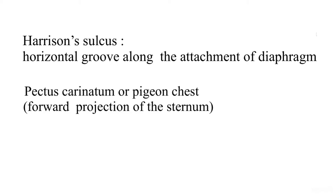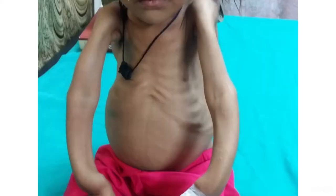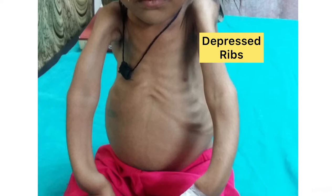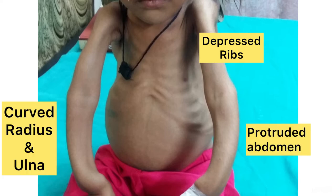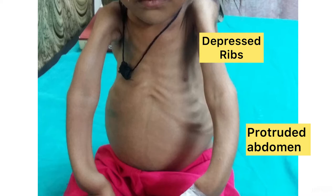There can be pectus carinatum or pigeon chest, that is forward protrusion of the sternum, or there can be pectus excavatum. Here is another child in whom we can appreciate depressed ribs, protuberant abdomen, and curved radius and ulna.